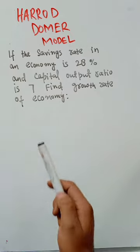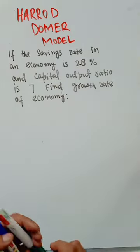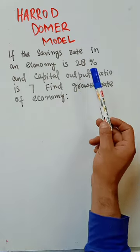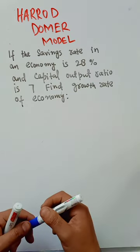Let's solve a question on the Harrod-Domar model. The question is: if the savings rate in an economy is given as 28 percent and capital output ratio is 7, find the growth rate of the economy.